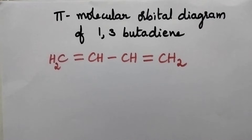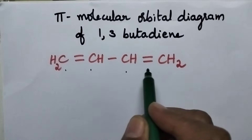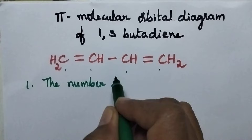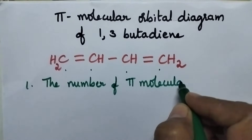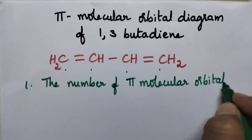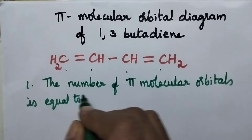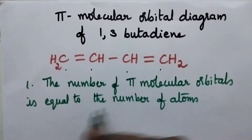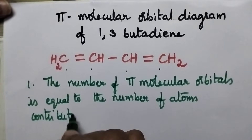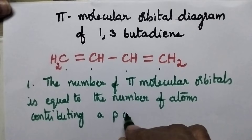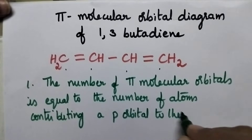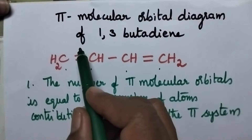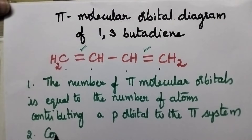Each carbon atom contributes 1 p orbital for the pi bond formation. So always the number of pi molecular orbitals is equal to the number of atoms contributing p orbitals to the pi system. Especially in 1,3-butadiene, the double bonds are present in an alternating system, so it is a good example of a conjugated system.